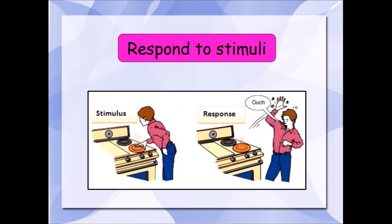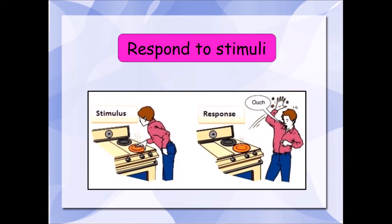The next one — respond to stimuli. Now, pay attention to this. Stimuli is a plural word. Stimulus, like in the picture, is the singular. But what are stimuli? Well, stimuli are the things that happen around us. In this picture, we have an example. If somebody touches something that is very hot, we're going to react — we have a reaction. If we see some kind of danger coming at us, we are going to try to jump away. This is the response to stimuli. There is a stimulus and it provokes a reaction from us. Every living thing responds in different ways to stimuli.